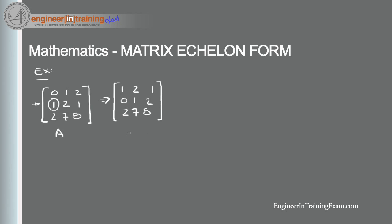We'll call this A1 and continue doing elementary row operations until we satisfy all the necessary conditions for row echelon form. We want to make sure all elements below our pivot in that column are equal to 0. So we need to get rid of the 2 in the third row, first column. We do that by multiplying the first row by negative 2 and adding that result to the third row.